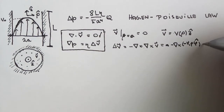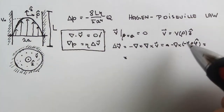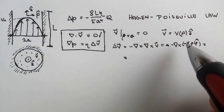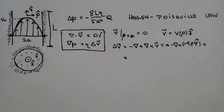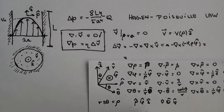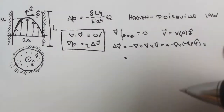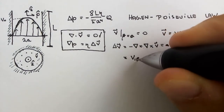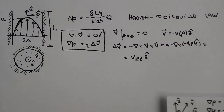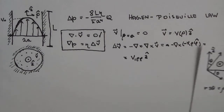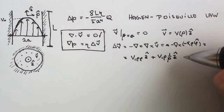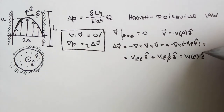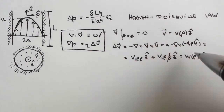Taking another curl: nabla acts on V(rho), giving dV/dRho times rho-hat cross phi-hat. Since rho and phi are in positive cyclic order, rho-hat cross phi-hat equals z-hat. We also use the identity that curl of phi-hat equals (1/rho)*z-hat, adding a V/rho * (1/rho) * z-hat term. The result can be written as W(rho)*z-hat, where W is a differential expression in V — the same functional form as before.